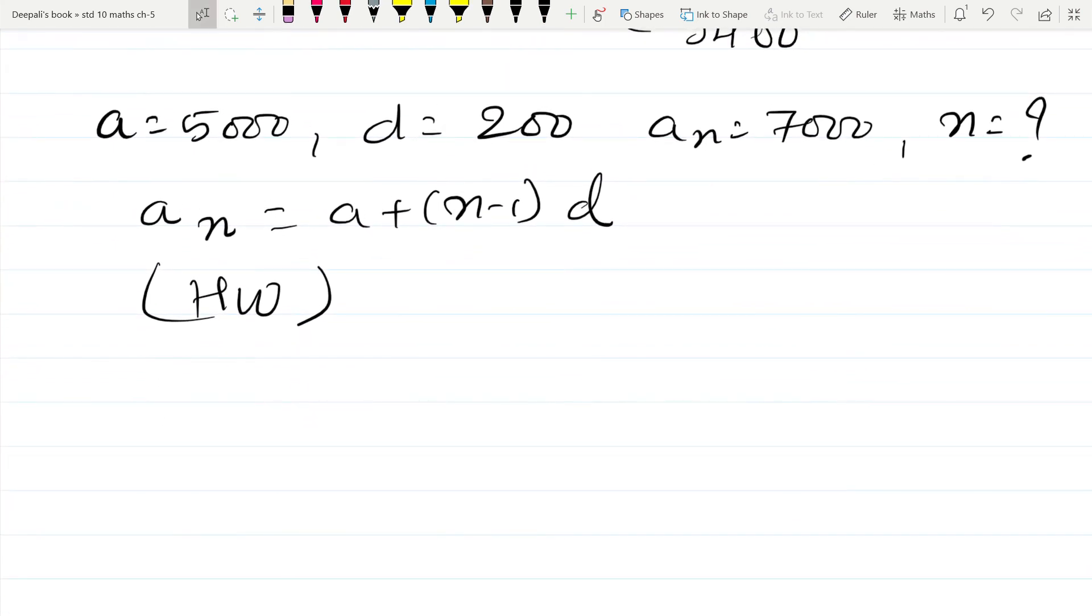Then 20th sum. Ramkali saved 5 rupees in first week of a year and then increased her weekly savings by 1.5. If in the nth week her weekly income was 20.75, find N. This is similar as the above question. So that will be your homework again.